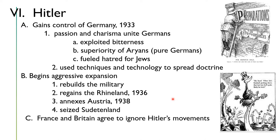Looking at Hitler on this road to war: Hitler became not only a part of, but a leader of the Nazi party. He used the method of propaganda to his advantage, and also took advantage of the depressed situation in Germany, so that by 1933 Hitler had gained control of Germany. Hitler had a great deal of passion and charisma that served to unite Germans for his cause, and he exploited the bitterness that was present in the country.